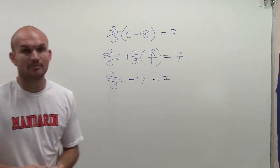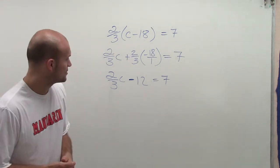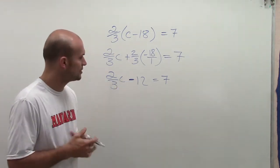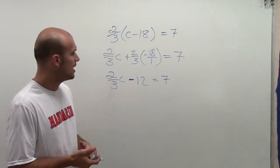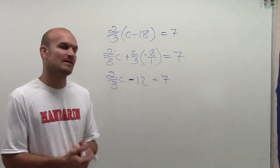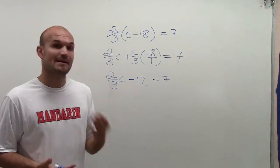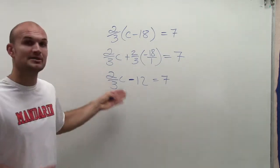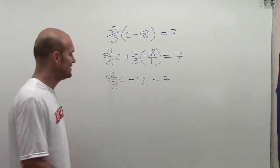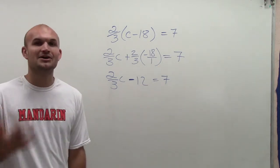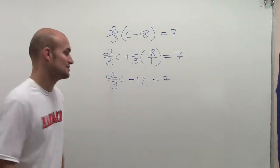Now I'm going to be using my two-step equations. I need to undo what's happening to my variable. The first thing that's happening to my variable is it's being multiplied by 2/3, and it's also being subtracted by 12. So I need to make sure I undo addition and subtraction first.